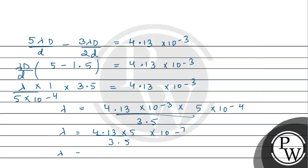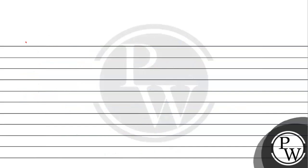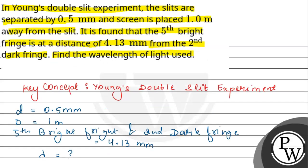We get 5.9 × 10⁻⁷ meters. So the final answer: the wavelength used, lambda, is equal to 5.9 × 10⁻⁷ meters. Hope you understood it well — best of luck!